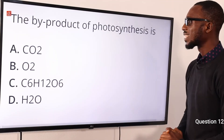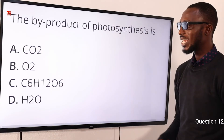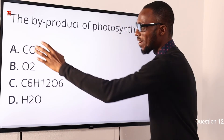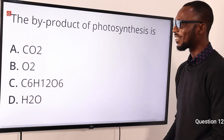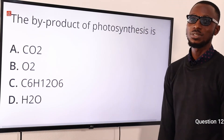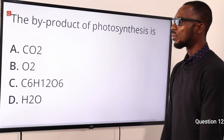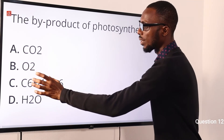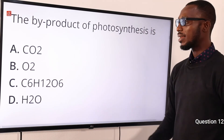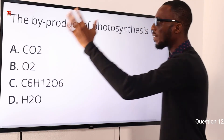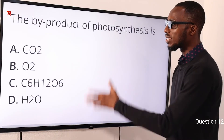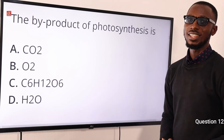Question 12. The byproduct of photosynthesis is what? In photosynthesis, in the presence of sunlight, the reactants combine to produce glucose (C6H12O6), a high-energy compound. There is also a waste product given out. The main product needed is glucose, and this waste product is the byproduct. The byproduct of photosynthesis is oxygen. The correct option is option B for oxygen.